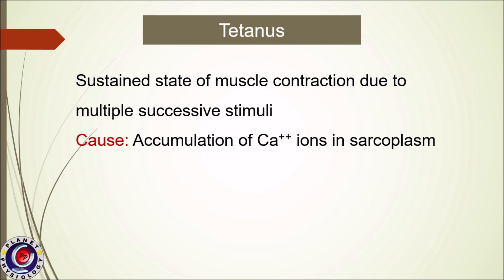Similarly, whenever there is excess of calcium ions in the sarcoplasm, that can also lead to a sustained state of muscle contraction. This usually happens if the muscle is stimulated successively by multiple stimuli, and this condition is called tetanus. Rapid multiple successive stimuli cause release of calcium with every impulse, and before calcium ions are pumped back into the sarcoplasmic reticulum, a new impulse causes further release of calcium. This accumulation of calcium is responsible for the sustained state of contraction.